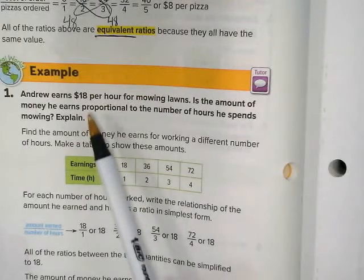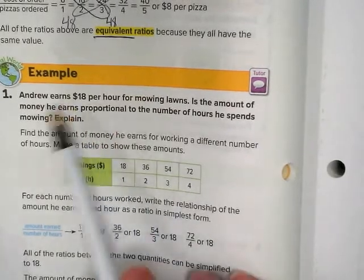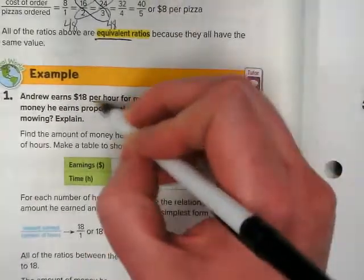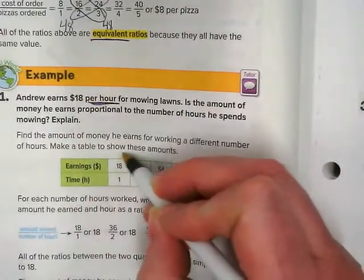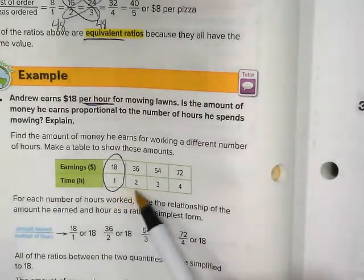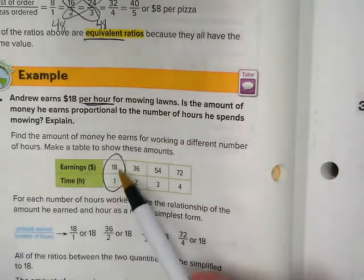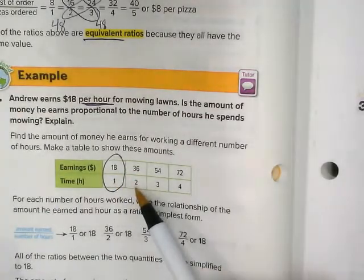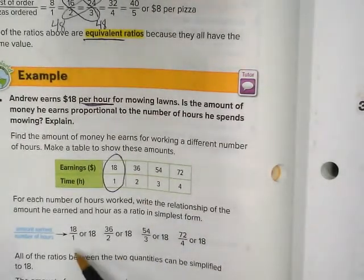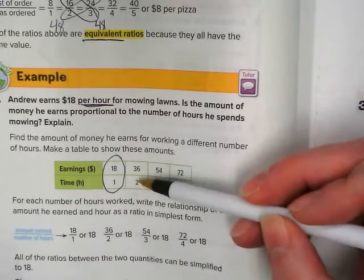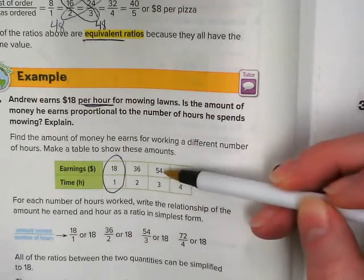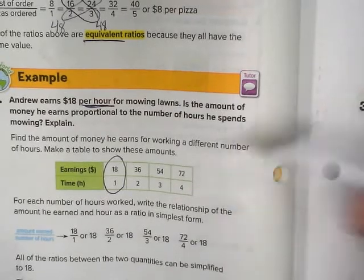I'd like you to take some time to look through the examples. You can pause the video. There's an example 1 where we're looking at Andrew earning $18 per hour. There's our unit rate. That means in the table it's going to show up as $18 per hour. One lawn is $18. If he does 2 hours for mowing lawns he gets $36. Is that a unit rate? Well yes because 36 divided by 2 would be equal to 18 over 1. Check and see if these are also true by dividing 54 by 3 and 72 by 4.